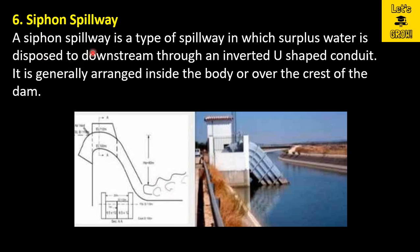The next one is the siphon spillway. A siphon spillway is a type of spillway in which surplus water is disposed to the downstream through an inverted U-shaped conduit. It is generally arranged inside the body or over the crest of the dam. Here in this image you can see the siphon spillway provided inside the dam body. When the water level of the reservoir rises, due to siphonic action, water starts to flow from upstream to downstream. We use the siphon action in this spillway, so it is termed the siphon spillway.